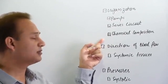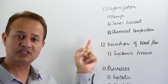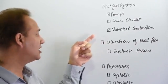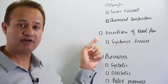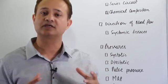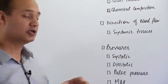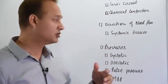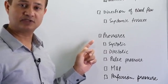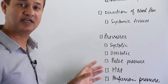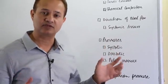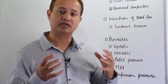We'll also cover the chemical composition — the oxygen and carbon dioxide levels at various parts in the cardiovascular channel — the direction of blood flow, what we mean by systemic tissue, and various pressures and their definitions. These topics will have separate lectures; here we just cover definitions so you know what the terms mean when they come up.